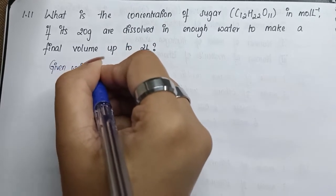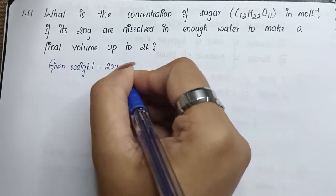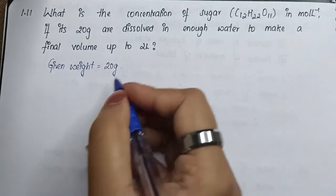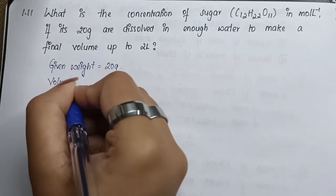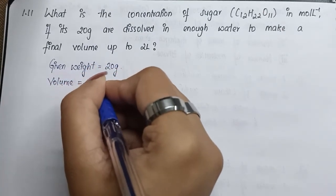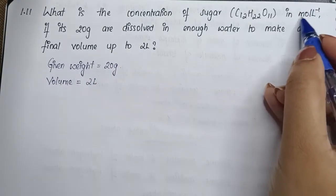Given weight in the question is 20 grams, so you write that. Next what is given to us is the volume. Volume equals 2 liters. It's directly in liters so we don't have to show any conversion in the formula for molarity.